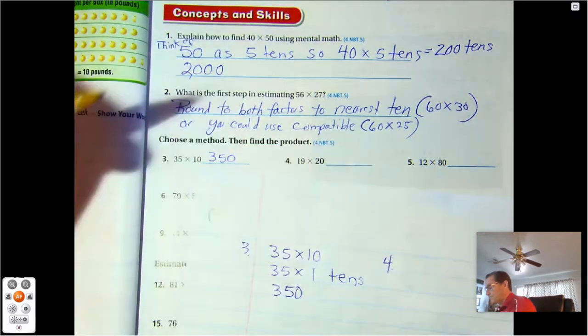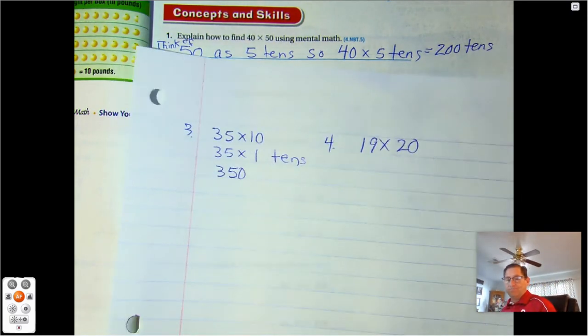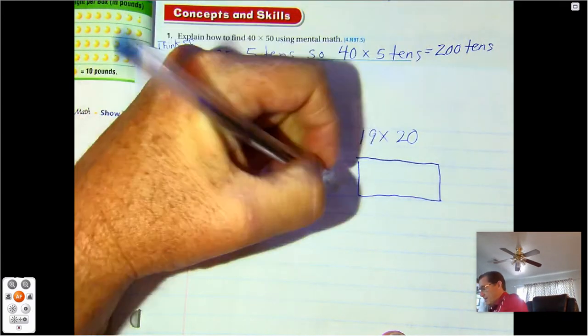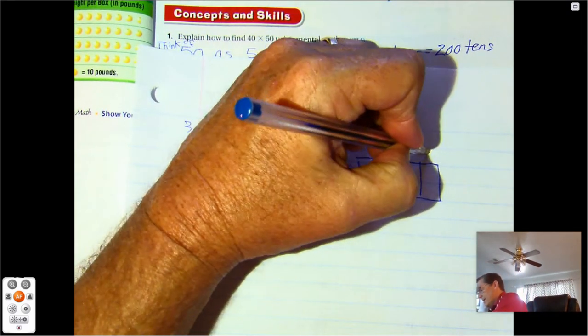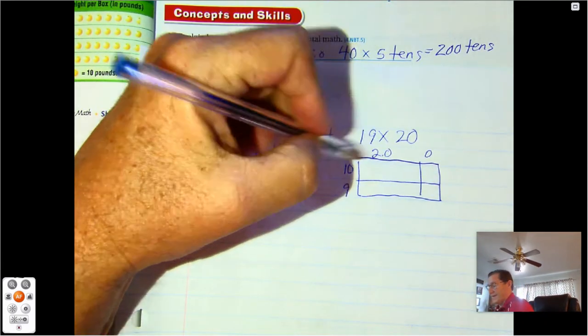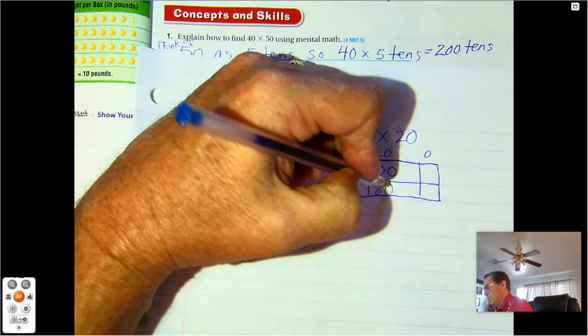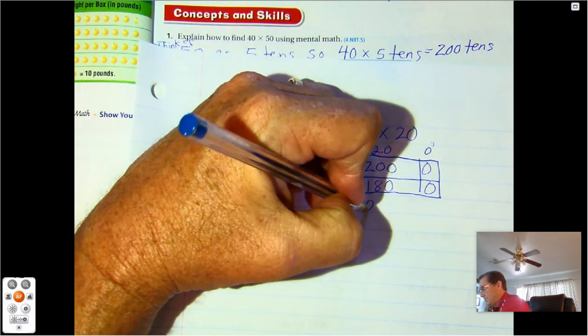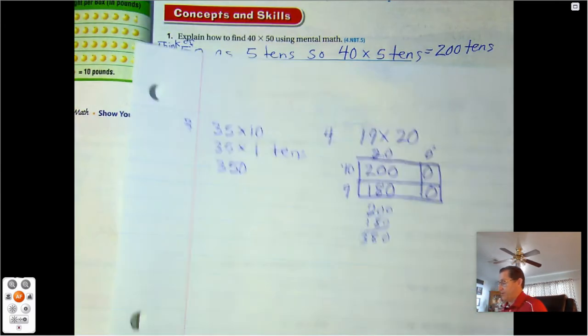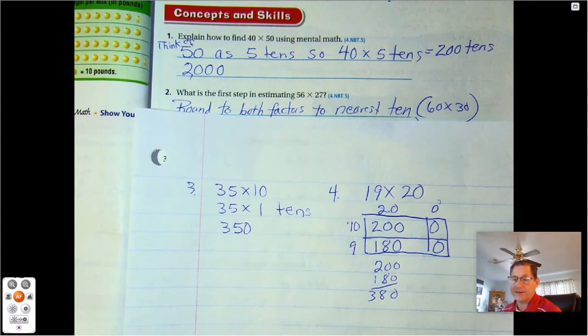Number four. 19 times 20. So for this method we might draw the boxes. Break up the 19 as 10 and 9, and going across the top we'd have 20 and 0. So 20 times 10 is 200. 9 times 20 is 180. 10 times 0 is 0, 9 times 0 is 0. So we add 200 plus 180, get 380. Again, these are just some methods. The methods can vary. You could use the methods that you're most comfortable with.